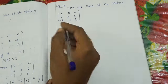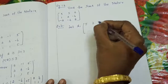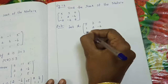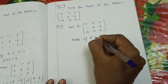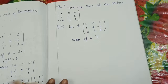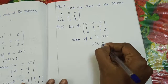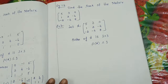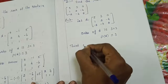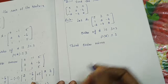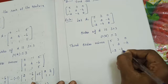This is also a 3 cross 3 matrix. Let A equal to 5, 3, 0; 1, 2, minus 4; minus 2, minus 4, 8. The order of A is 3 cross 3, so rho of A must be less than or equal to 3. First, find the third order minor — the determinant of 5, 3, 0; 1, 2, minus 4; minus 2, minus 4, 8.